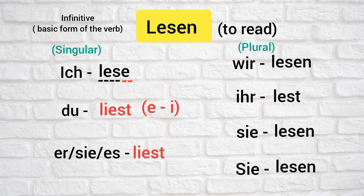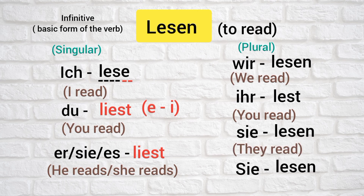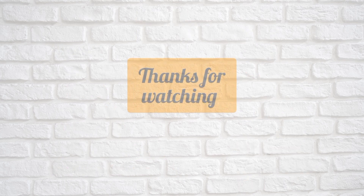So: ish lesen means I read, do least means you read, air zs least means he/she reads, via lesen means we read, ear lasst means you read, z lesen means they read, and z lesen means you read (formal). I hope this is clear to you. That is all for today, thanks for watching.